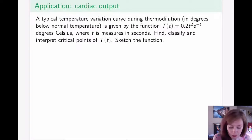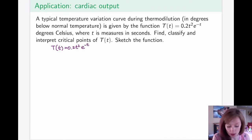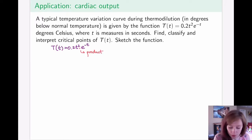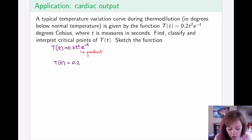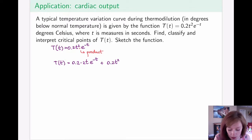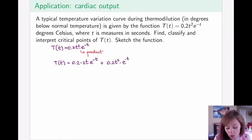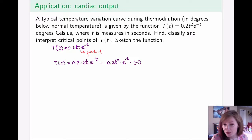Let's first take the derivative. Rewriting the function, notice that this is 0.2T² times e^(−T), which means this is a product and we must apply the product rule. The derivative of the first function, 0.2T², is 0.2 times 2T, and then we leave the second function alone; plus we leave the first piece and take the derivative of the second function. The derivative of e^(−T) is itself times the derivative of its inside, −T, which is −1.